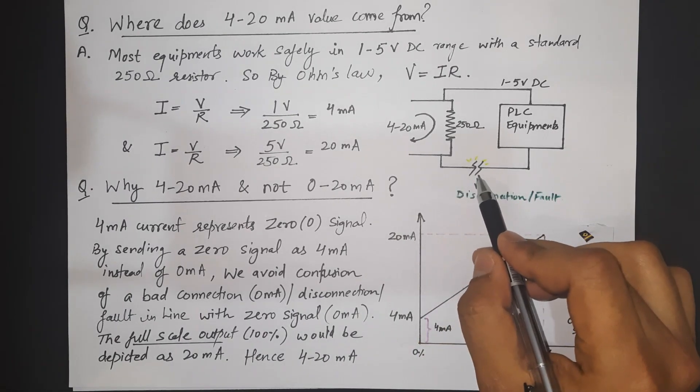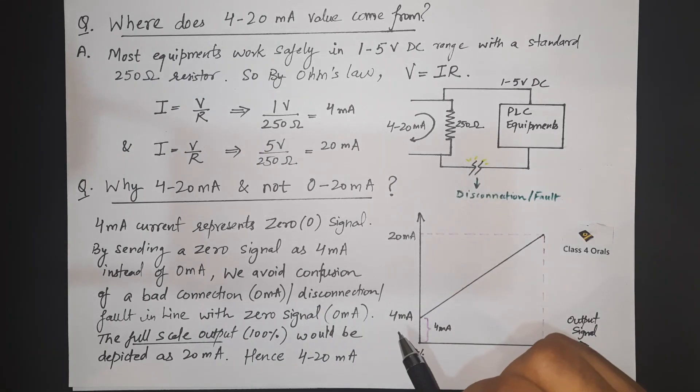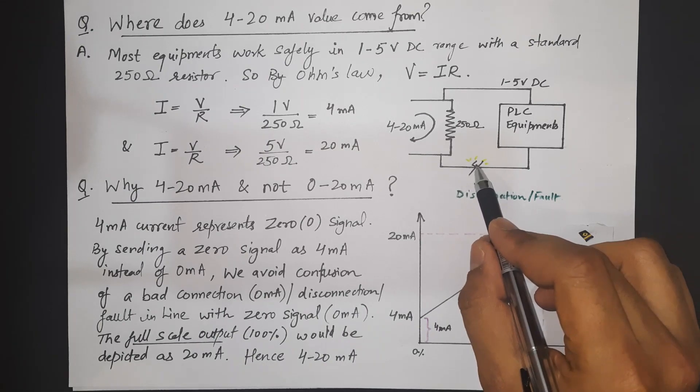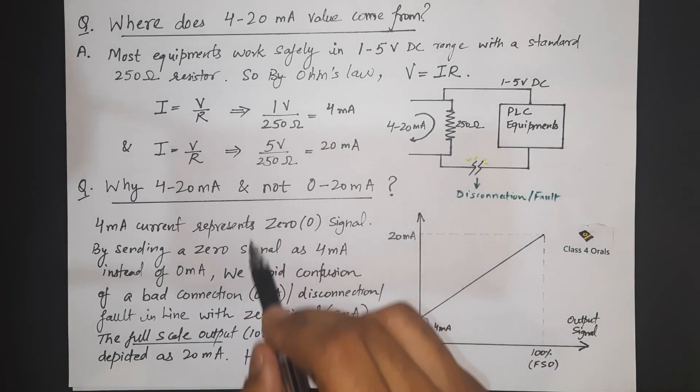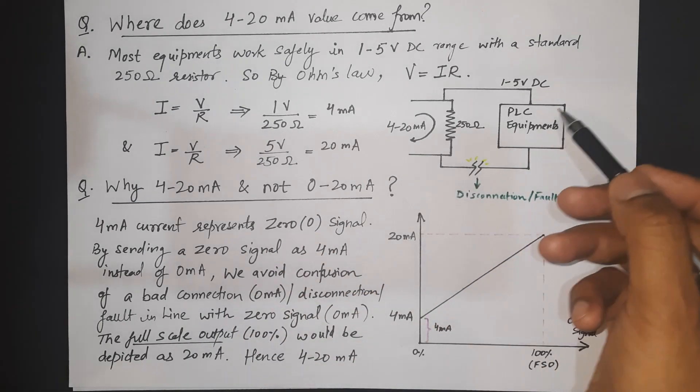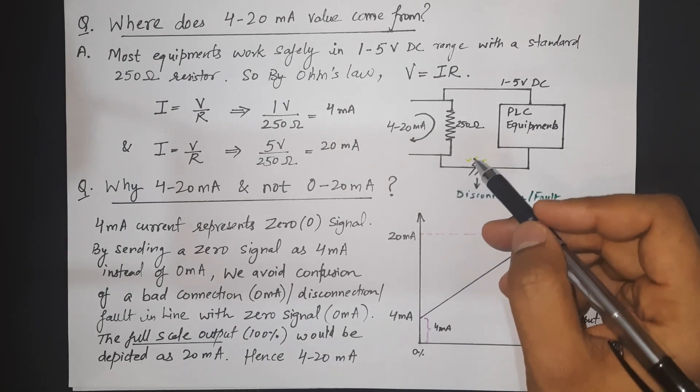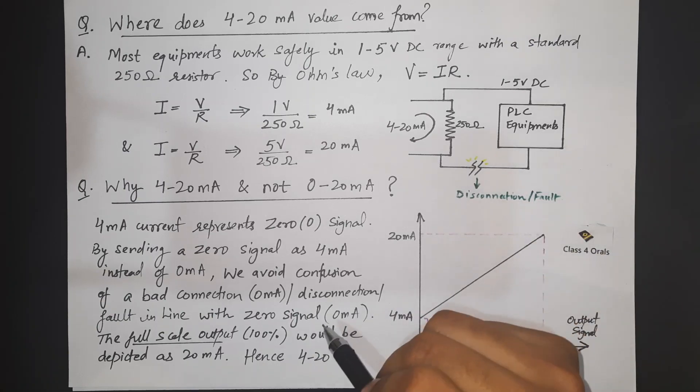If there is some disconnection that means there is no current or there is no output going. So if we are measuring with 0 mA you will not get to know whether the system is having any kind of breakage or not or any disconnection or not.